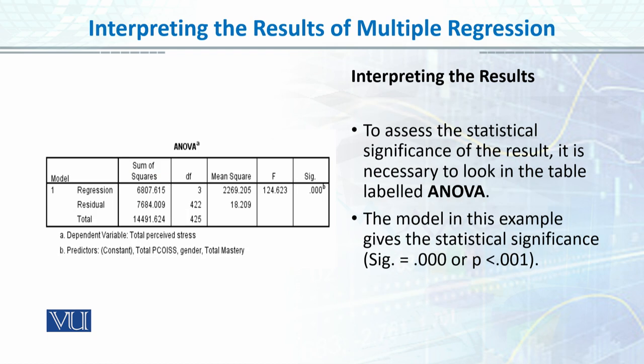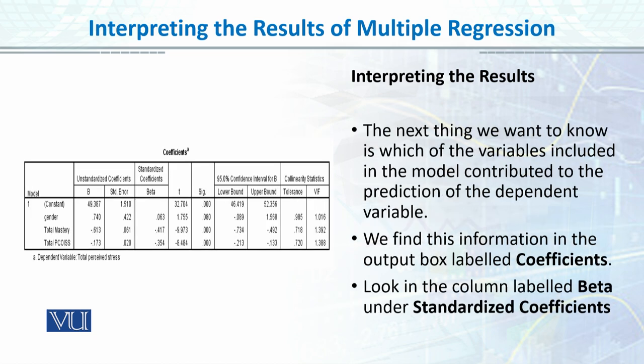The next table is ANOVA. It tests whether the model you have created — A plus Bx — is better than the null model. The ANOVA is significant with degrees of freedom 3 and 42, which means the model reached statistical significance and is a better model to predict the dependent variable, perceived stress.